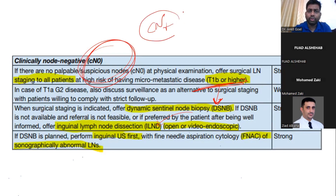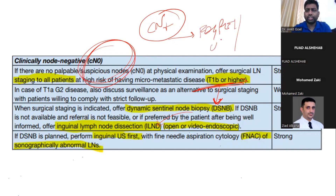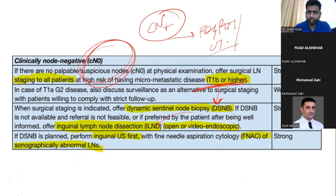For clinical N positive, the next step is an FDG-PET or a CT scan of the chest, abdomen, and pelvis to stage, and then you proceed for a radical inguinal lymph node dissection. That is how you manage clinical N positive, and clinical N zero management has been described as above.